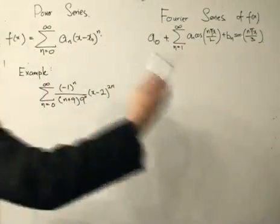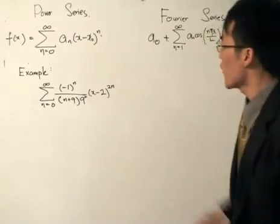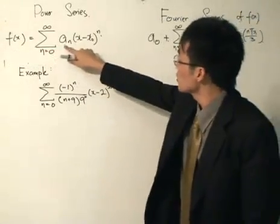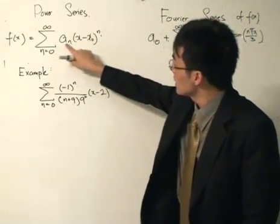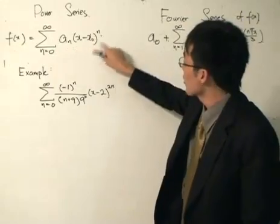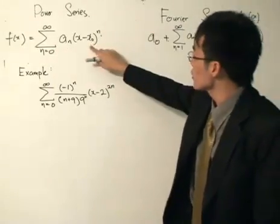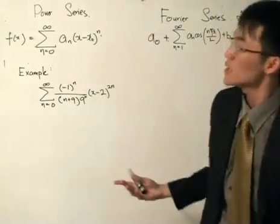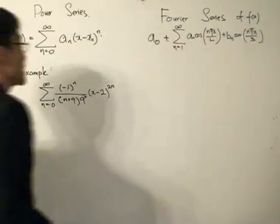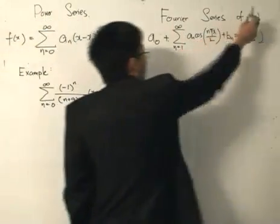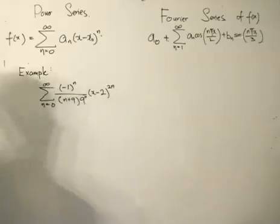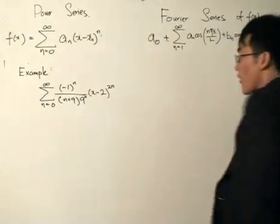In standard textbook algebra or calculus, the power series is given by: f(x) equals the sum from n equals zero to infinity of a_n times (x minus x-naught) to the power of n, where x-naught is called the center of the series. I'm not here to teach power series itself, but about the difference in convergence between the two series. The Fourier series of f(x) is given by its own formula.